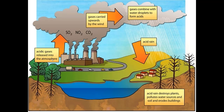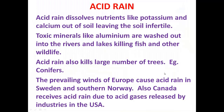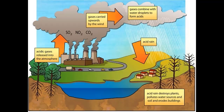Acidic gases — sulfur dioxide, nitrogen oxides, and carbon dioxide — are released into the atmosphere by industries and exhaust fumes. With the wind, they are carried to different areas, where they combine with water droplets and fall as acid rain, damaging trees, plants, soil, and buildings.